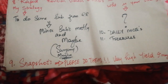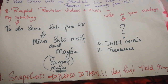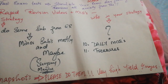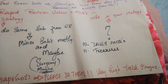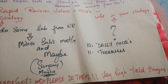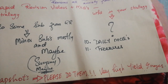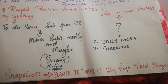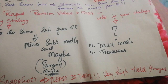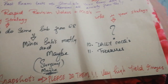Number nine is snapshot notes — please do them. They are very high-yield images. If you have the book, mark it and write the answers. It's like a photographic memory that will come back to you. Believe me, it's really effective.